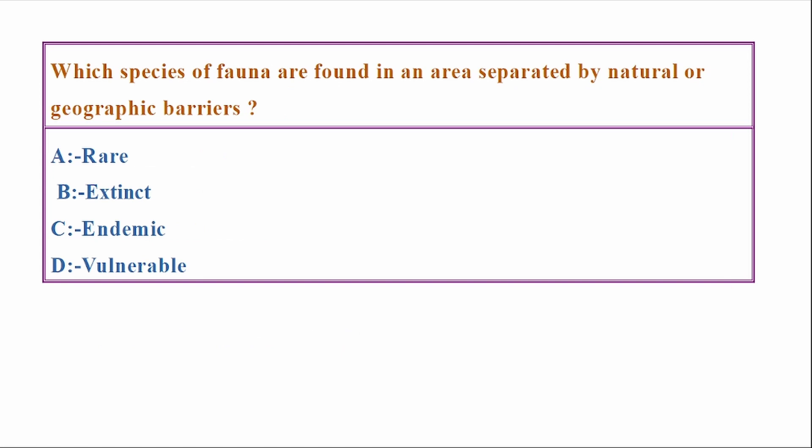Which species of fauna are found in an area separated by natural or geographic barriers? Options: rare, extinct, endemic, vulnerable. Correct answer: Option C, endemic.